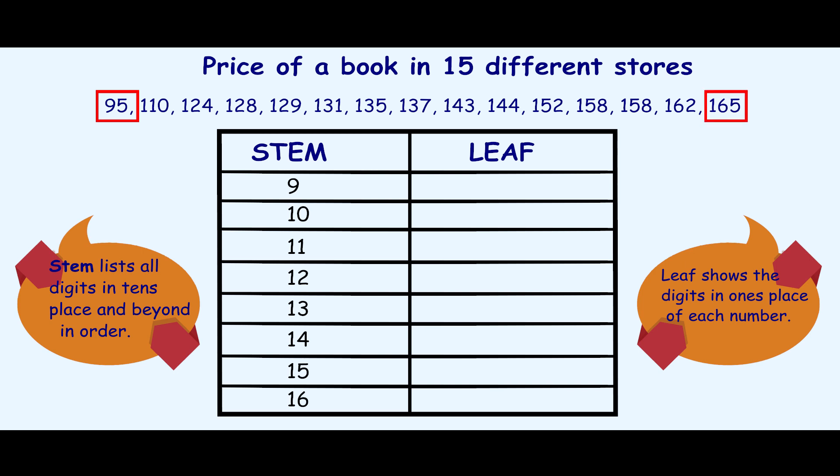We are planning to keep two digits in the stem and one digit in the leaf. Since the minimum value is 95, the digit 9 is already in the stem, so the last digit goes to the leaf. For stem 10, since we don't have any numbers in the hundreds, we leave the leaf empty. For stem 11, the next number is 110 — the tens and hundreds place are reflected in the stem as 11, so the last digit goes in the leaf. We continue inserting leaves for all digits in the data set, and this is finally how our stem and leaf plot looks.